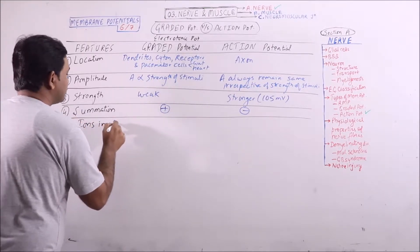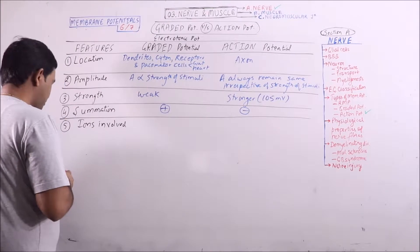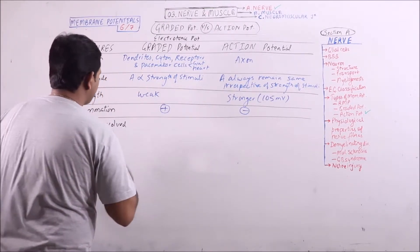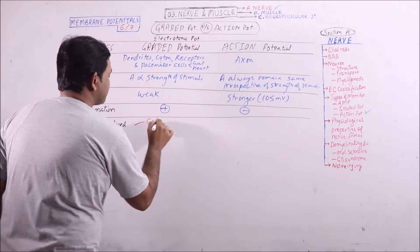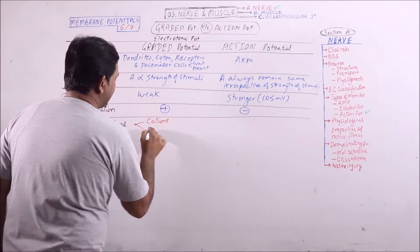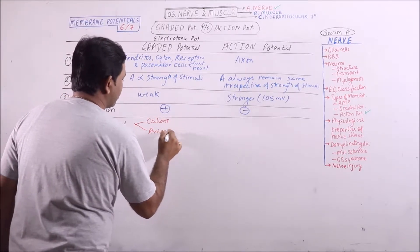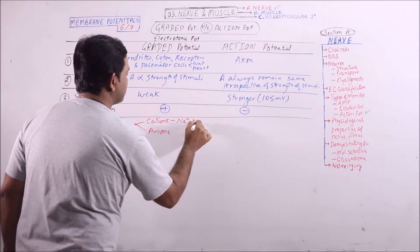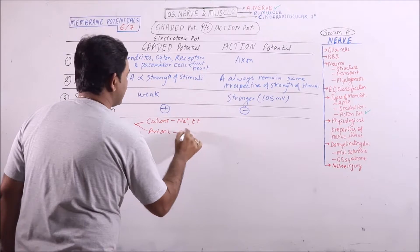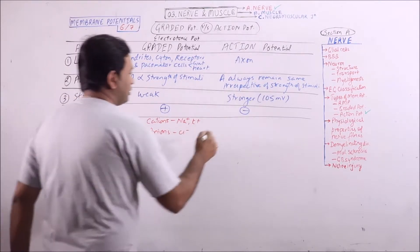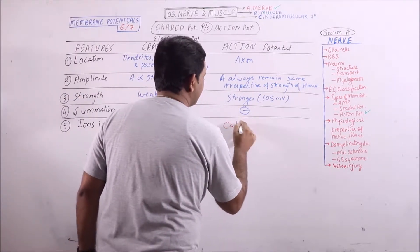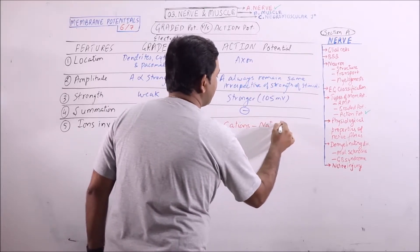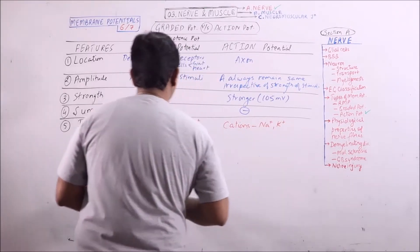Ions involved. It is important to note that in graded potential, both cations and anions can be involved — cations like sodium and potassium, and anions like chloride. But in action potential, only cations have an important role to play, which involves sodium and potassium.